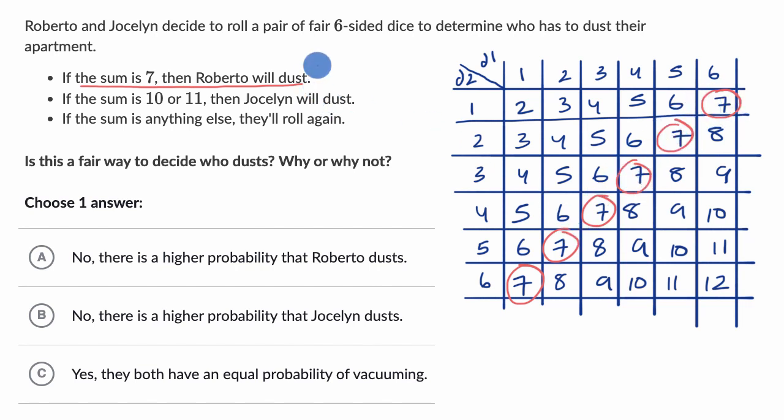So six of these outcomes result in a sum of seven. And how many possible equally likely outcomes are there? Well, there are six times six equally possible outcomes, or 36. So six out of the 36, or this is another way of saying there's a one-sixth probability that Roberto will dust.